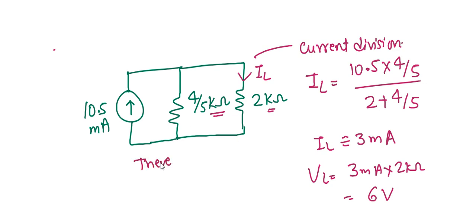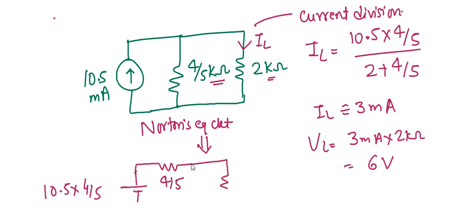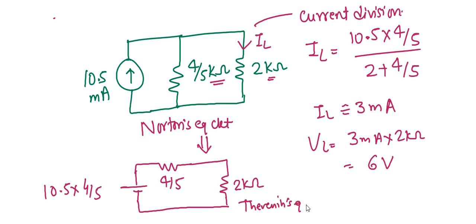This is the Norton's equivalent circuit. We can also convert the same circuit into Thevenin's equivalent using source transformation. We have one current source in parallel with the resistance — that can be converted into a voltage source of value 10.5 into 4/5. The resistance of 4/5 kilohm will then be in series, again in series with the 2 kilohm value. So we can convert the Norton circuit into Thevenin's equivalent using source transformation.